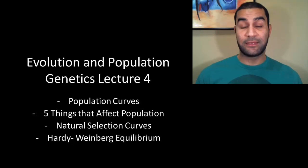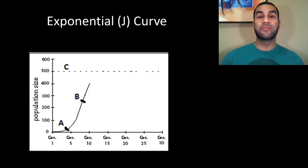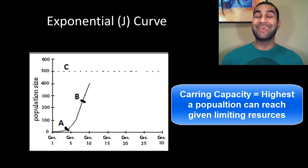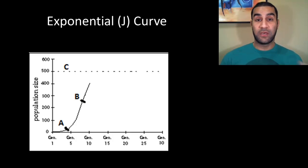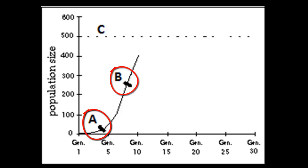Populations introduced into a given environment always follow a particular pattern, falling into one of two different curves. The only real difference between the two curves is whether or not they reach their carrying capacity. The carrying capacity for a given area is the highest the population can reach and still function and be successful. What we see here is what we consider an exponential or J curve — showing the introduction of a new population into a new ecosystem with little competition for resources.